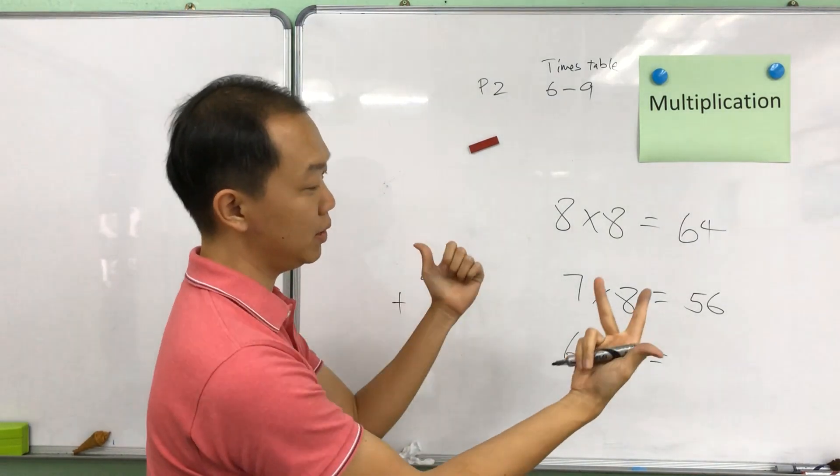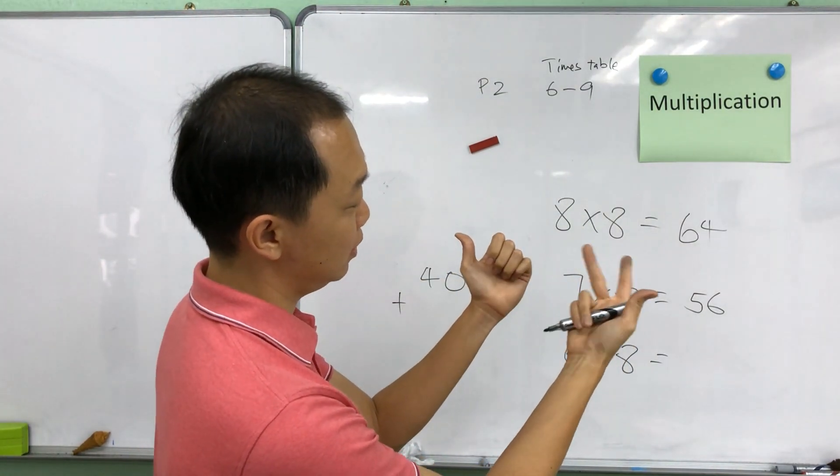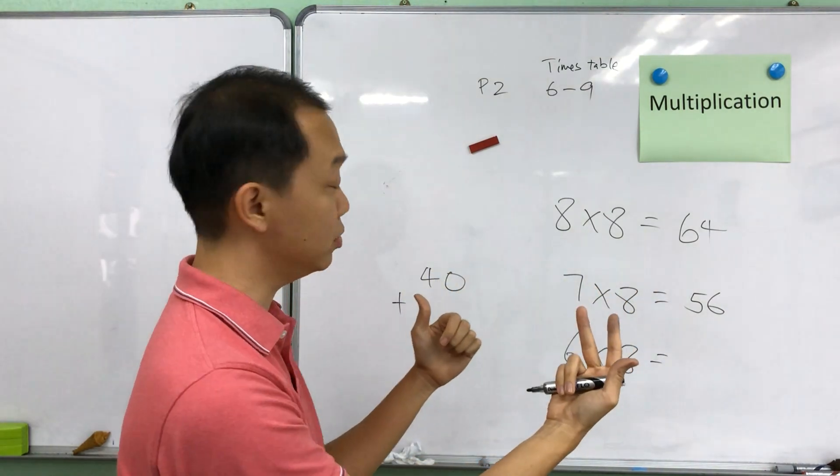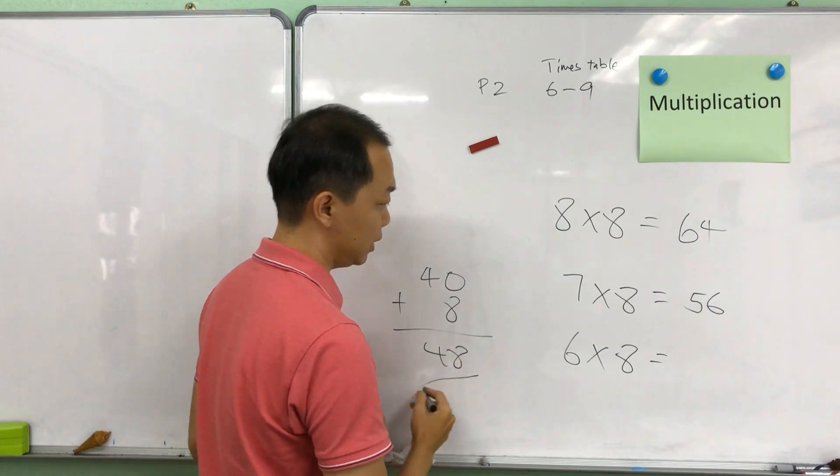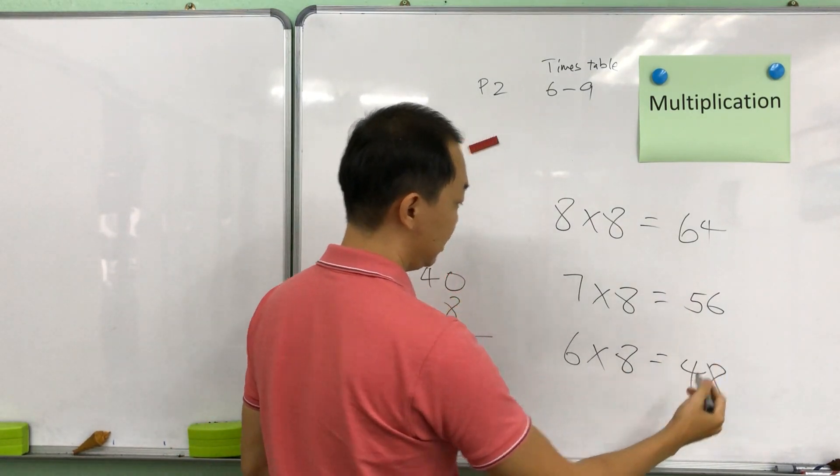Plus, now how many fingers are pointing down? I have 4 here and I have 2 here. So that's 4 times 2, which gives me 8. So 40 plus 8 becomes 48.